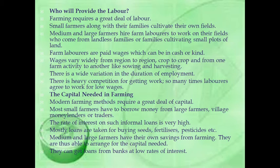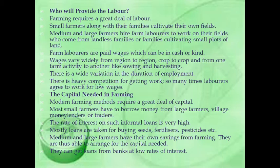The capital needed in farming: modern farming methods require a great deal of capital. Capital means money. Most small farmers have to borrow money from large farmers, village moneylenders or traders. The rate of interest on such informal loans is very high. Mostly loans are taken for buying seeds, fertilizers, pesticides, etc. Medium and large farmers have their own savings from farming and can get loans from banks at low rates of interest.